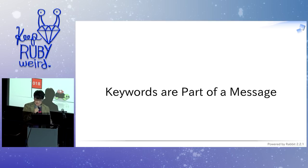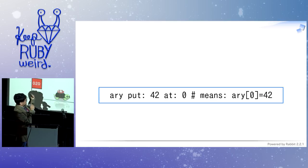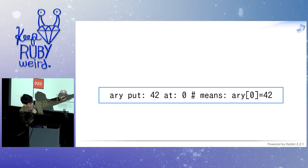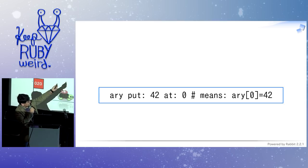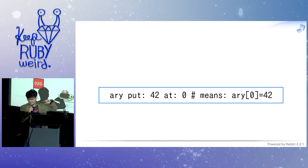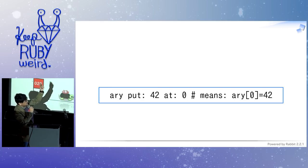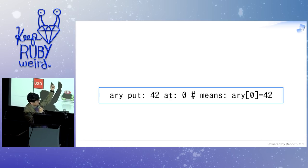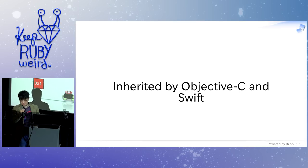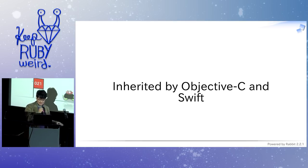In Smalltalk, the keywords are part of the message or method name. For example, you can put the number 42 at position zero — that works like array-bracket-zero equals 42 in Ruby. In that program, 'put' and 'at' are part of the method name — we call it 'put:at:'. This kind of characteristic of the method name is inherited by Objective-C and Swift.